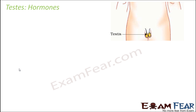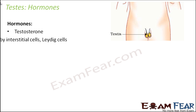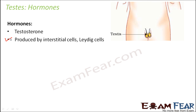Now let us look at the hormones secreted by the testes. The most important hormone is testosterone, and it is secreted by the interstitial cells. The testes are made up of interstitial cells and seminiferous tubules. The interstitial cells contain a special type called Leydig cells, and these Leydig cells are responsible for producing testosterone. You may recall that the anterior pituitary controls the production of testosterone by acting on the Leydig cells.